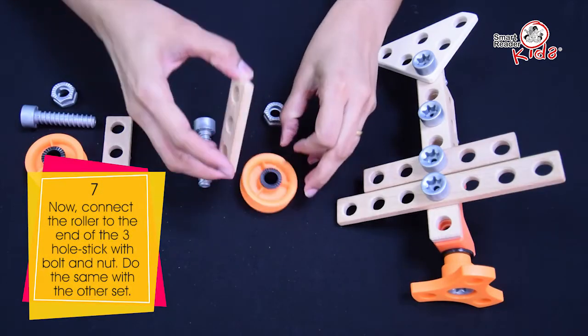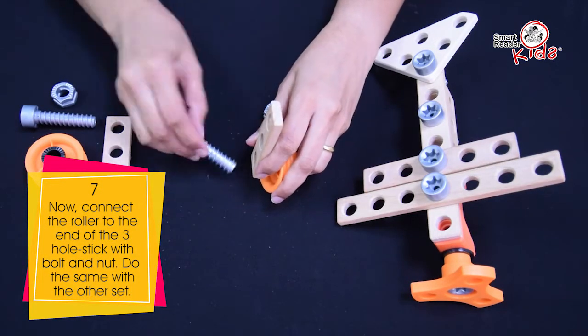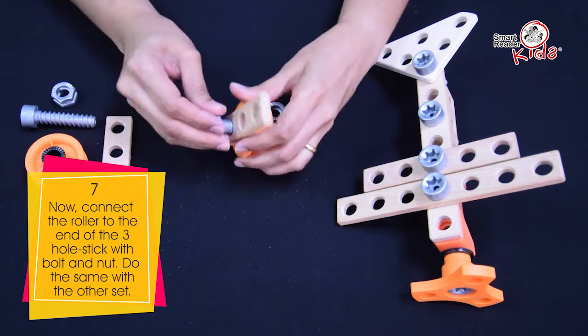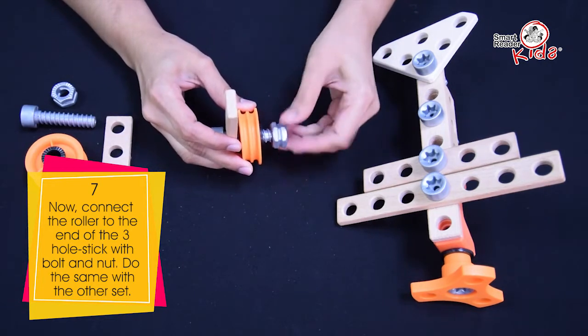Now, connect the roller to the end of the 3-hole stick with bolt and nut. Do the same with the other set.